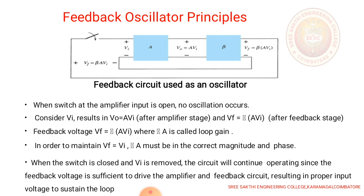And the output of the feedback stage, that is Vf, is equal to beta times A times VI, where Vf is called as feedback voltage and beta A is the loop gain. In order to maintain Vf equals VI, beta A must be in the correct magnitude and phase. When the switch is closed and VI is removed, the circuit will continue operating since the feedback voltage is sufficient to drive the amplifier and feedback network, resulting in proper input voltage to sustain the loop.